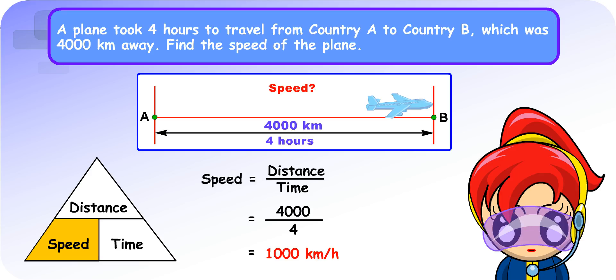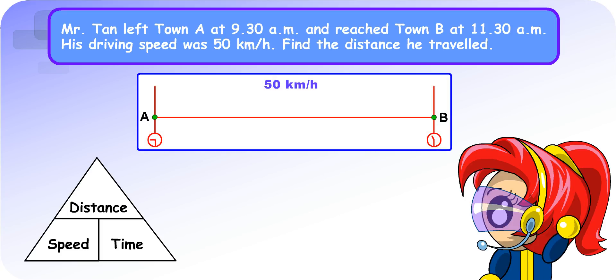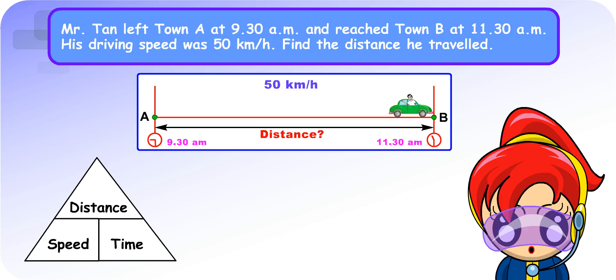Let's look at another example. Can you help me to solve it? Well, let me think. First of all, we need to find the time Mr. Tan spent driving. He started at 9:30 a.m. and stopped at 11:30 a.m. So, the time Mr. Tan spent on driving was 2 hours.